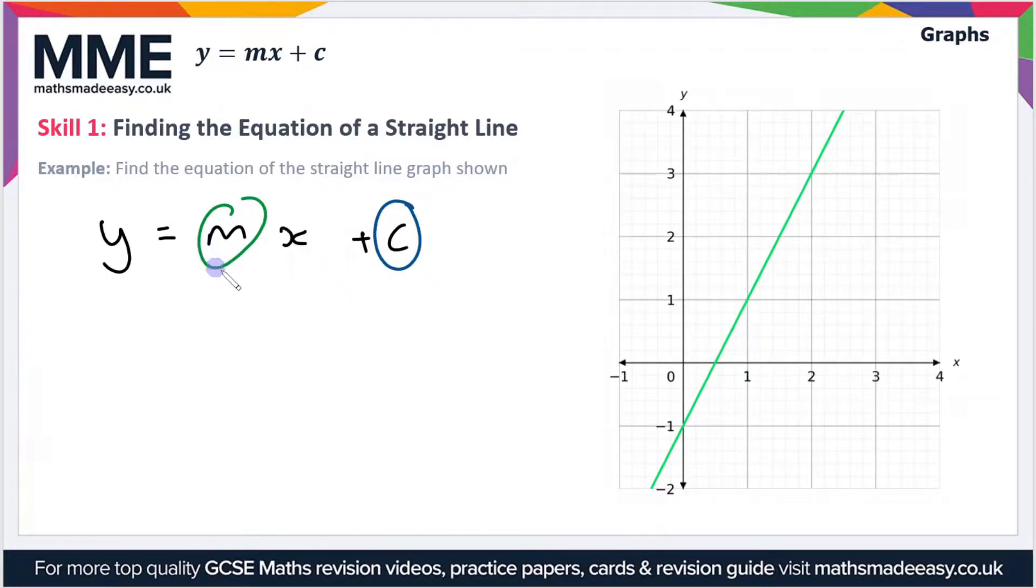So what are these two values? Well m is the gradient of the line, so that's the steepness of the line, and c is the y-intercept. The c value is really easy to find. You just go to the point where the line crosses the y-axis. So here that's a negative one, so we can say that c equals negative one.